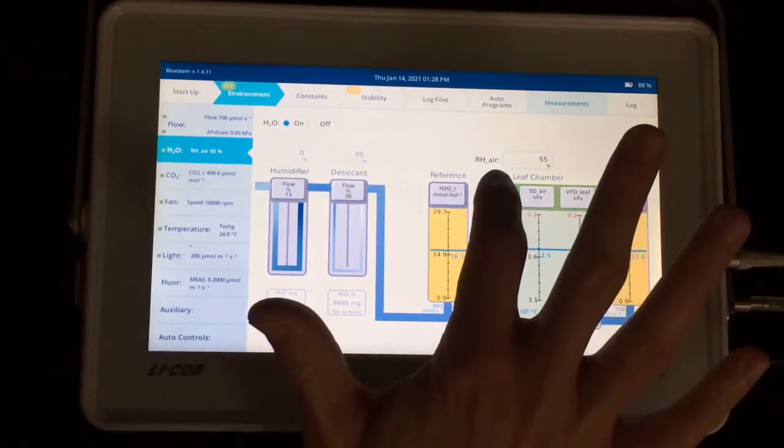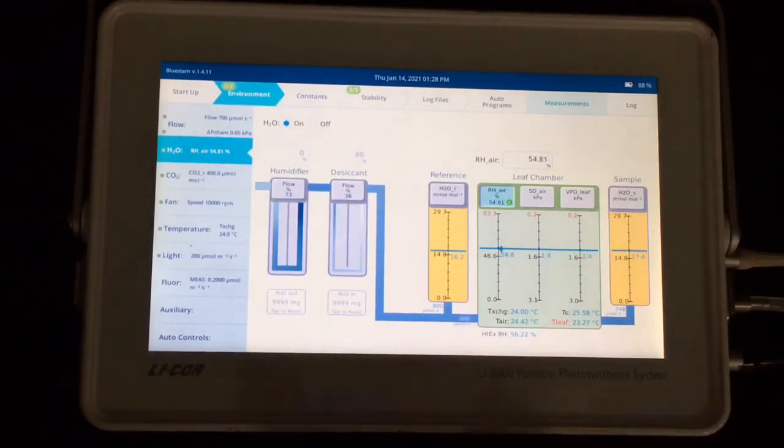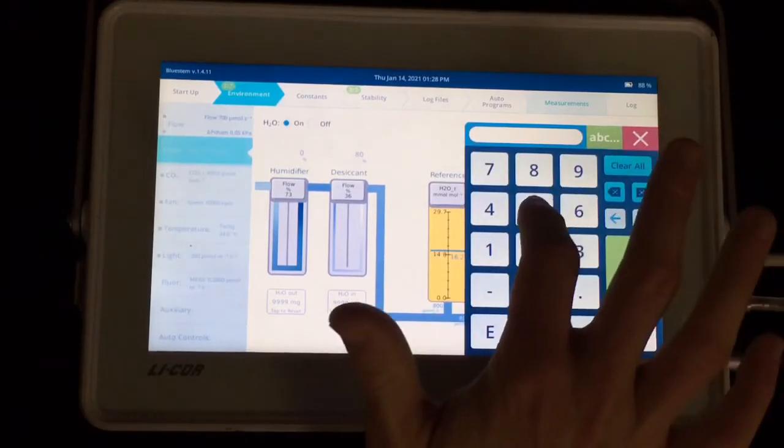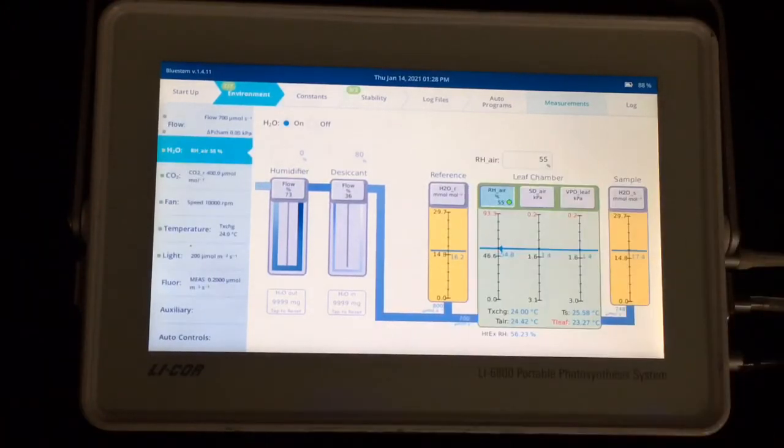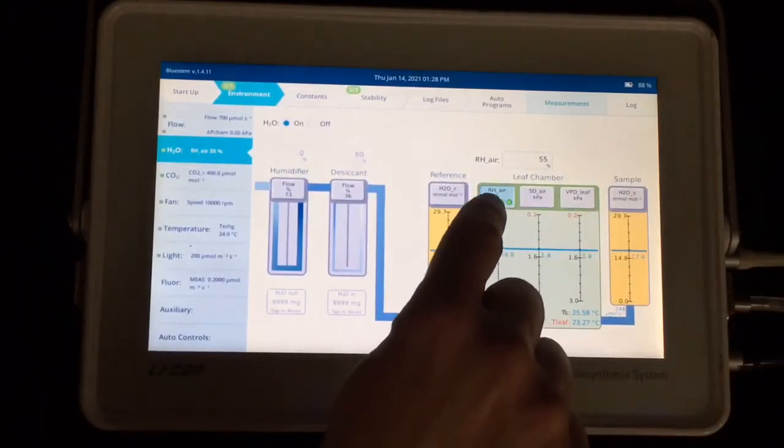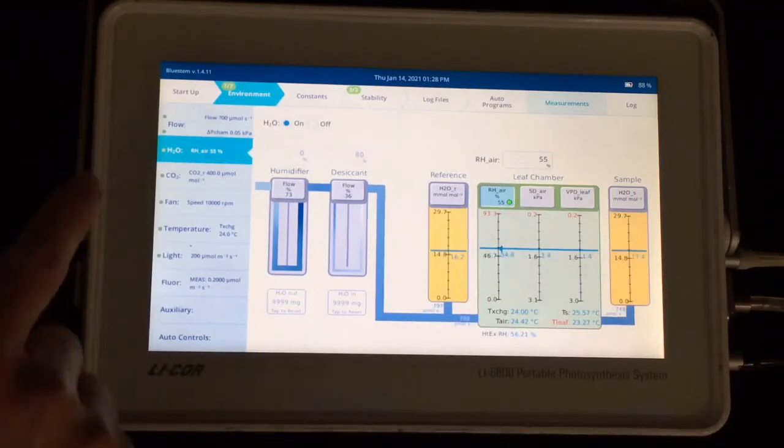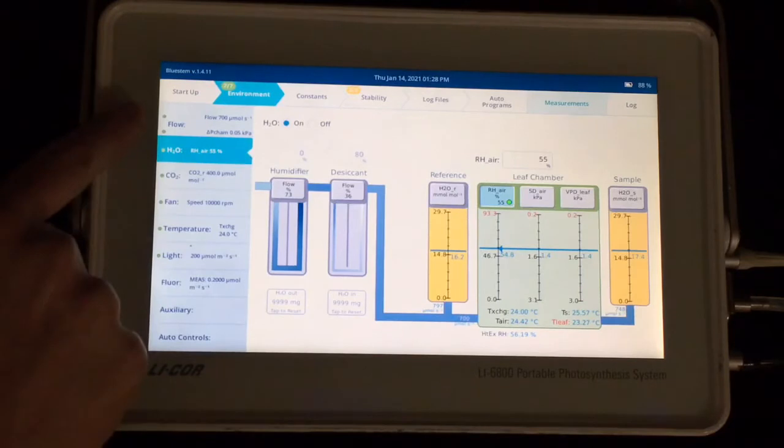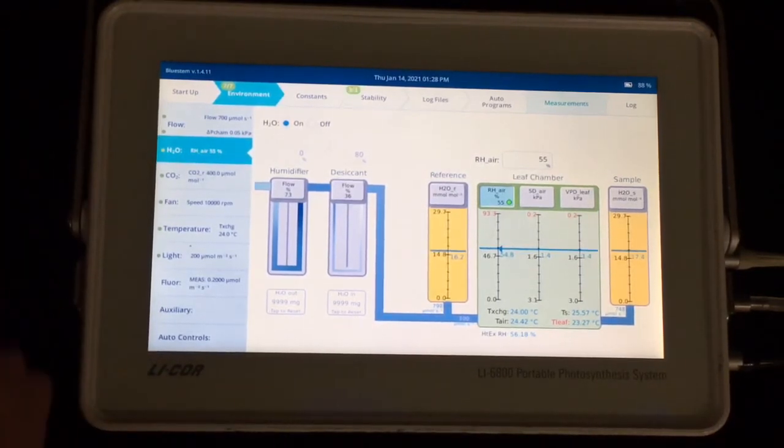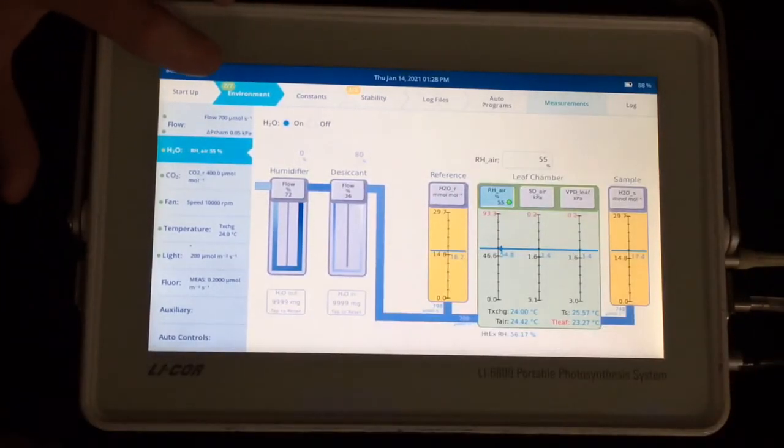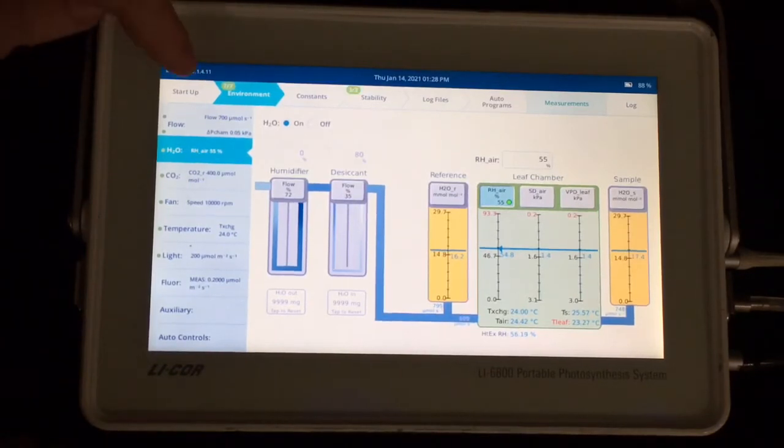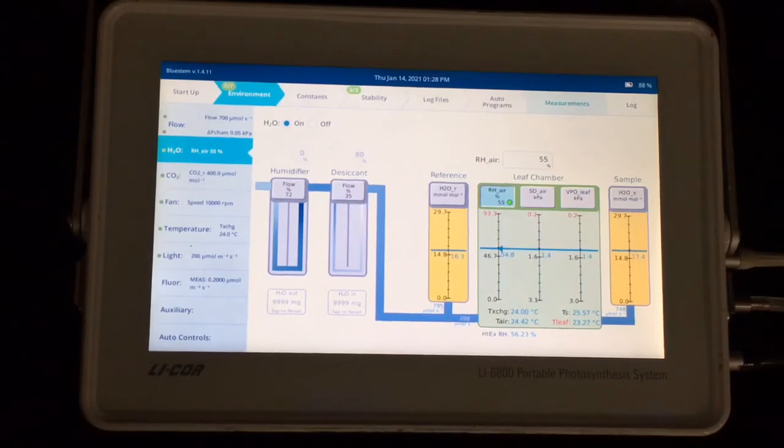And again, you set those by tapping on the variable you want to change and then picking a setpoint. And you'll also see when the setpoint I'm choosing hits its mark and is happy at the setpoint you've chosen, you'll see this green circle telling you that. And that's also visible down the left-hand column over here. And up top, so if you're on a different screen, you can see of the control loops you have working, how many of them have hit their setpoint. And in my case, all seven have hit their setpoint.